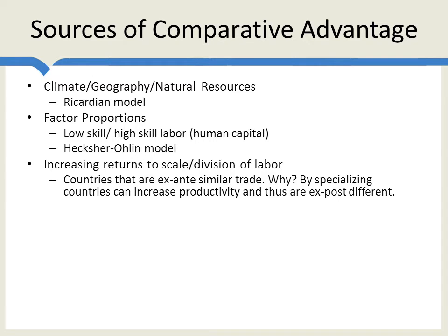For example, in the world we don't need every single country to have its own automobile plant or its own set of automobile producers. It's better to specialize in one or two or half a dozen countries producing automobiles because you get economies of scale — it becomes cheaper to produce automobiles per unit the more automobiles are produced. So by specializing, one country produces automobiles, another produces aircraft, another produces computerized chips. Countries can take advantage of economies of scale, become more productive in one good or set of goods, and then trade for the other goods that they want. So it's still comparative advantage, but it's comparative advantage created afterwards in order to take advantage of increasing returns.